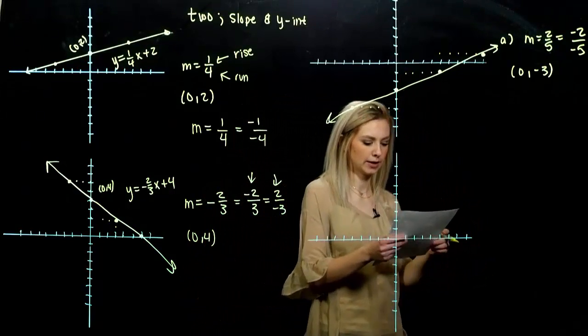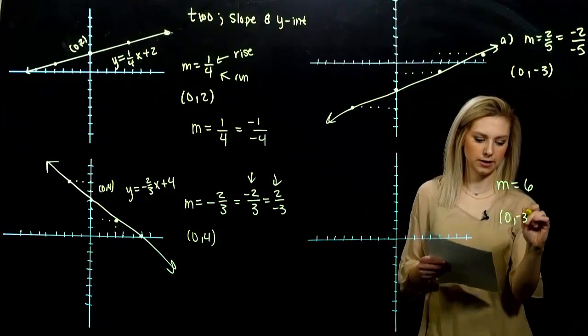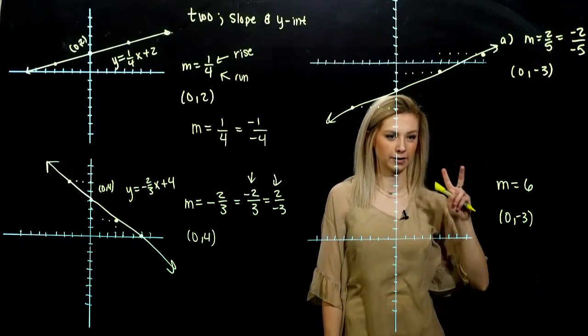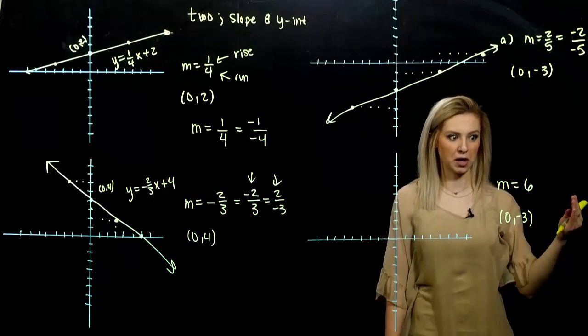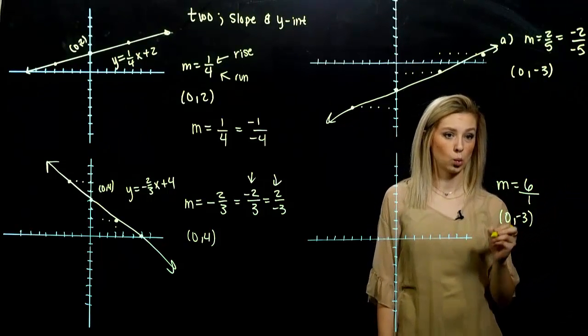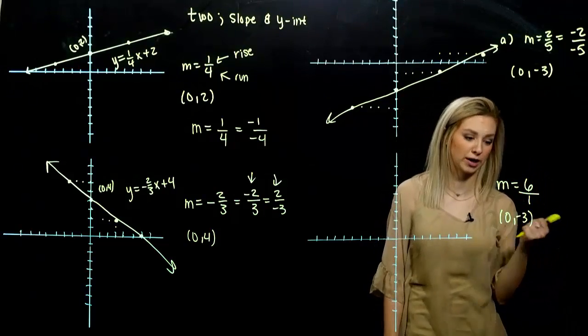Last, you had a slope of six, y-intercept minus three. How can we rewrite that slope as a fraction? How can we make it be a rise over a run? Six over what is equivalent to six? One. So for every six units I'm running, or excuse me, rising, I'm running one.